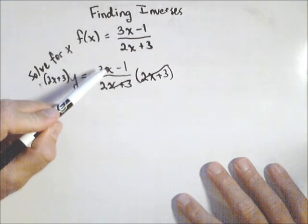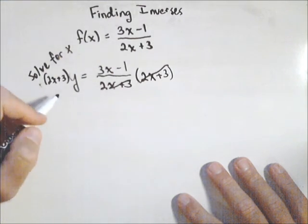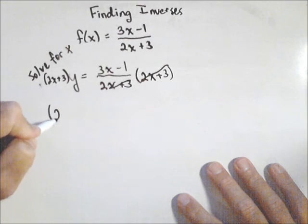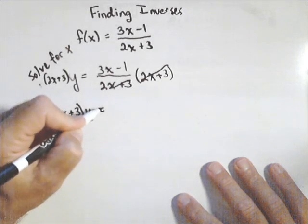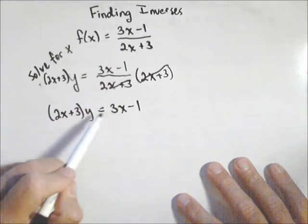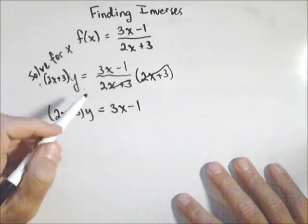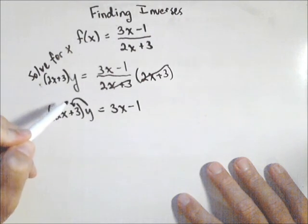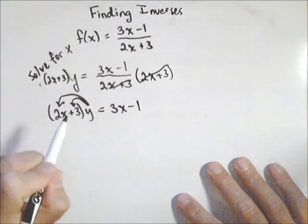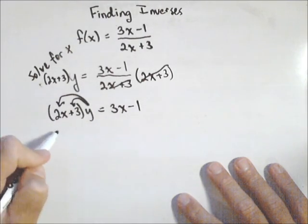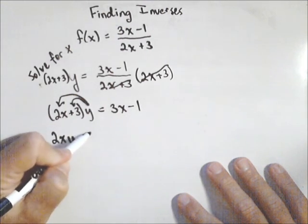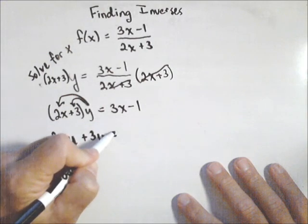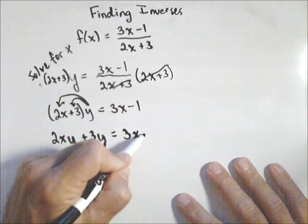Now if I look, I have x's on both sides. I have (2x+3), the quantity times y, equals 3x-1. I need to get those terms with x on the same side. So I'm going to distribute this y to both terms over the parentheses. So 2xy + 3y = 3x - 1.